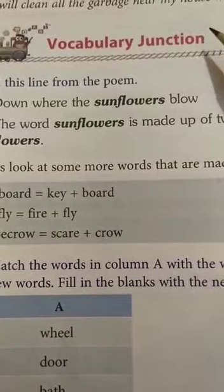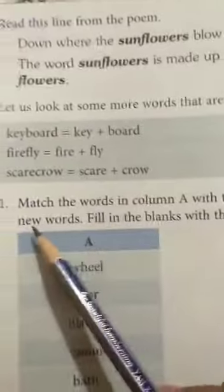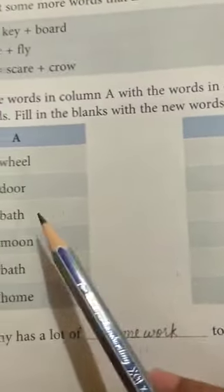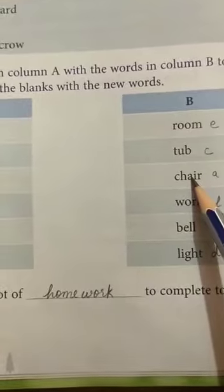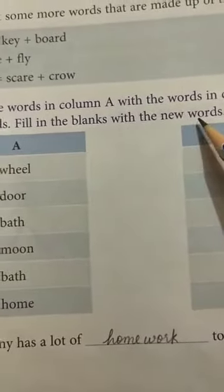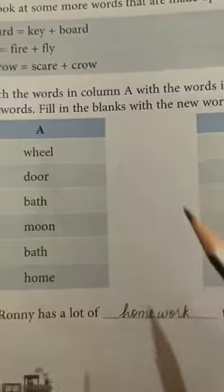Starting with vocabulary junction, children, that is on page number 174. Let us read question number 1: Match the words in column A with the words in column B to form new words. You have column A and column B given here. We have to match the words from column A with the words from column B to make new words, and after making new words, we have to fill them in the fill-ups.